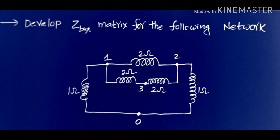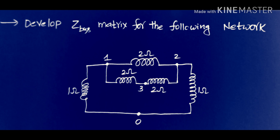This is the problem given to us — we need to find the Z-bus matrix using the building algorithm. The buses shown are the first bus, second bus, third bus, and the reference bus. As understood from previous videos, to obtain the Z-bus matrix using the building algorithm, we add one element at a time to the existing partial network. We have five elements, so we add one at a time. First, I am adding a 1 ohm element between the reference bus and the first bus.